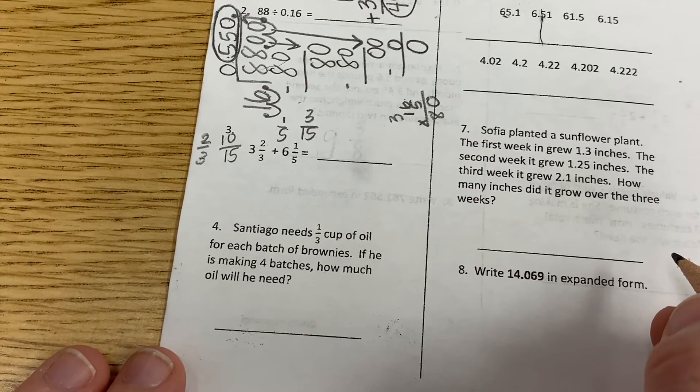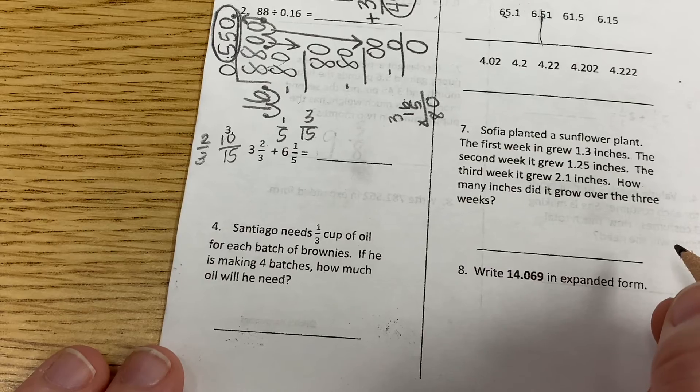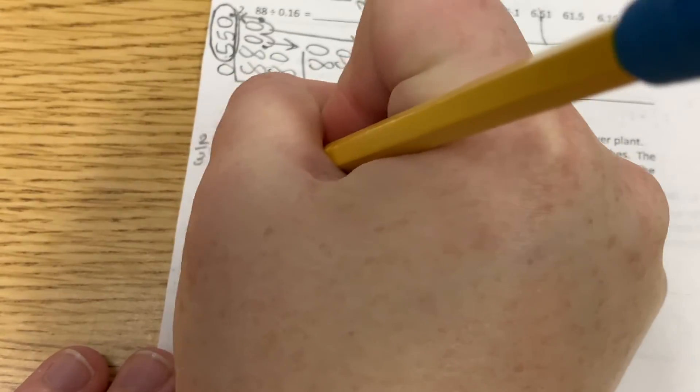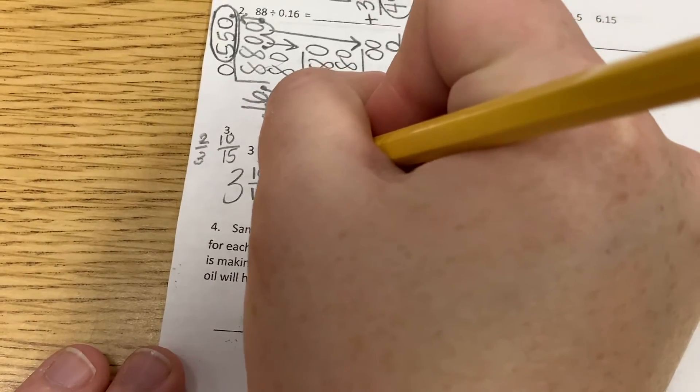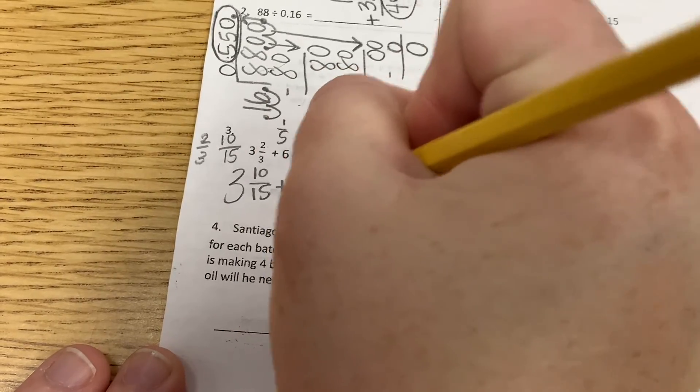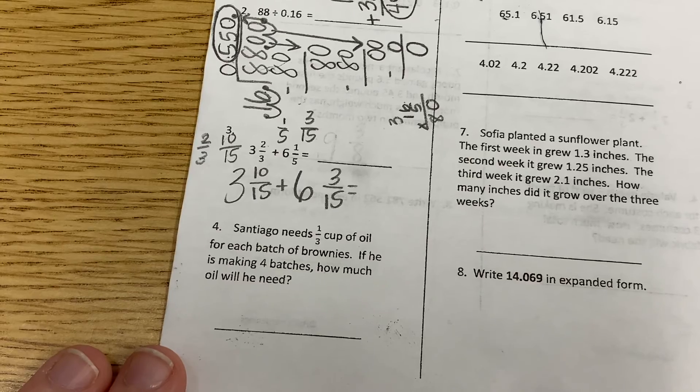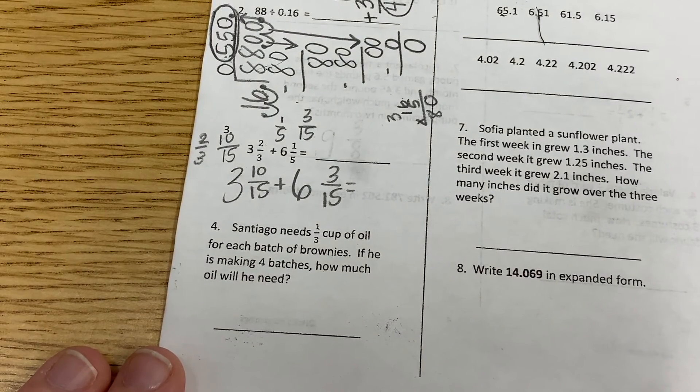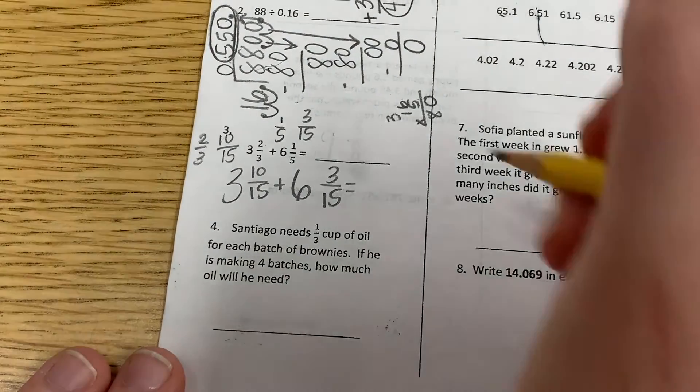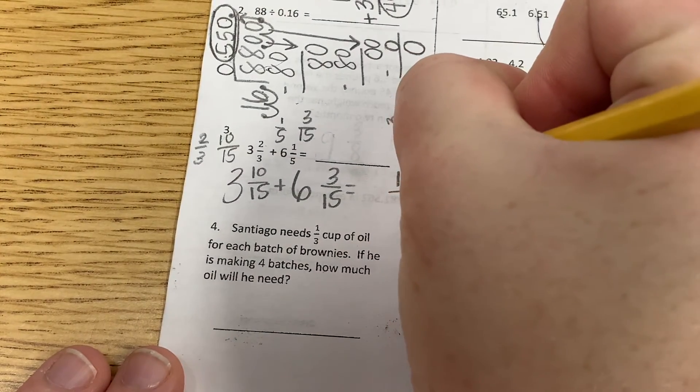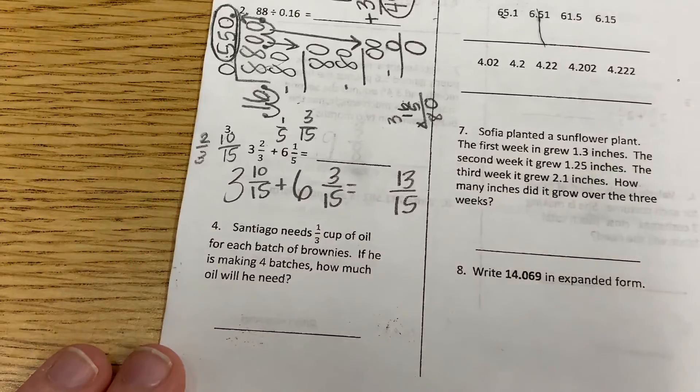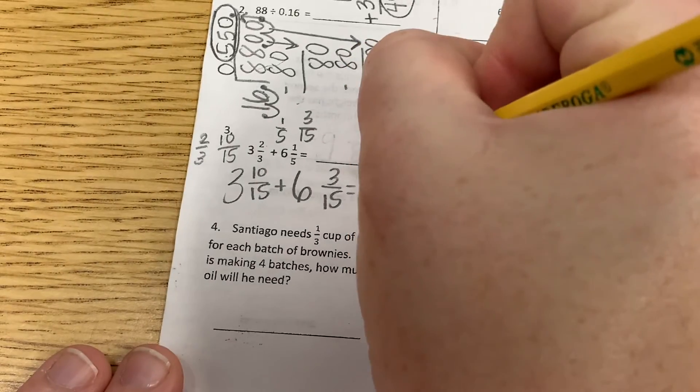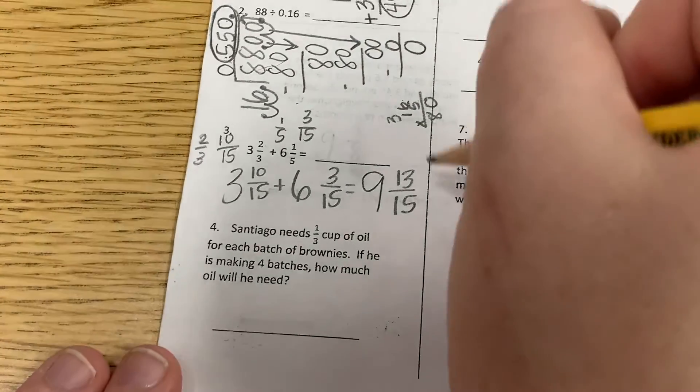Okay. So now I want somebody to put this problem back together so that I can add it like it wants me to. Emma, go ahead. 3 and 10 fifteenths plus 6 and 3 fifteenths is what she said. Do we agree? Yes. Okay. If we add just our fractions first, what do we get, Nevaeh? Just our fractions. 13? Yes. 13 what? 13 over 15. Then if we add just our whole numbers, what do we get, Blessing? 9. So what's our answer? 9 and 13 over 15.